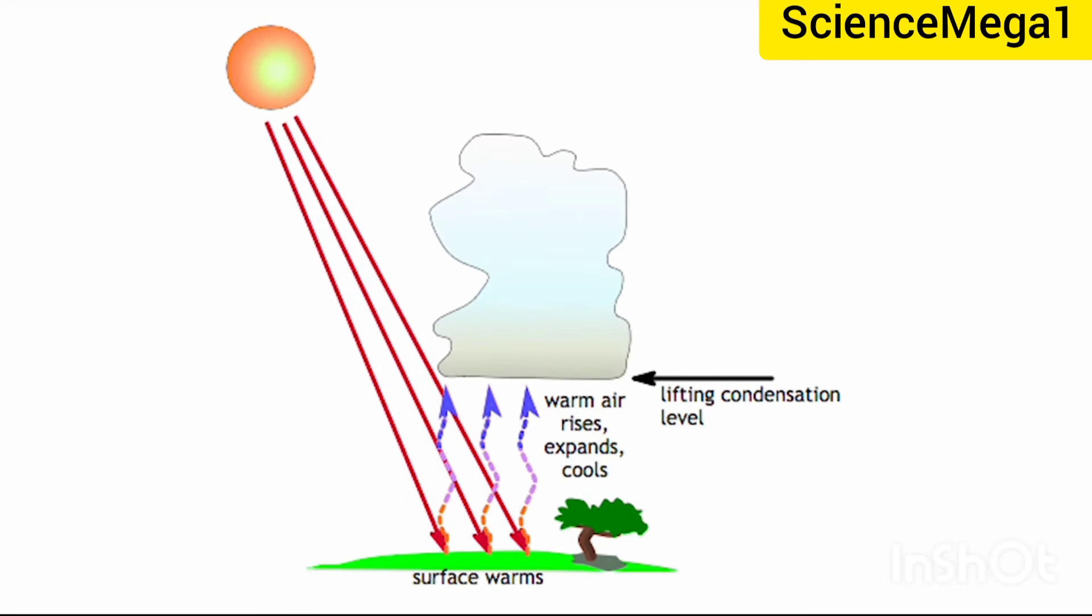Natural convection current over the earth's surface is what we are turning our attention to. Cloud formation is the first one we are looking at. Convection currents over the earth's surface carry warm, moist air upwards where it expands and cools. If the air cools below its dew point, then drops of water condense forming a cloud.